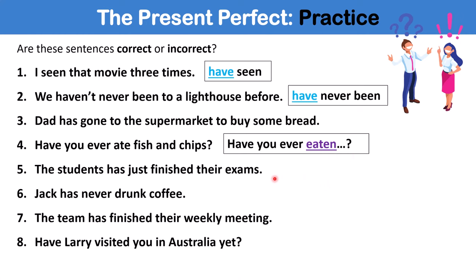Number five is also incorrect. Here we have a subject verb agreement error. The students is plural. So, we need to change has to have. The students have just finished. And number six is correct. This one might be confusing for some people because it's not often you hear the word drunk used in this way.